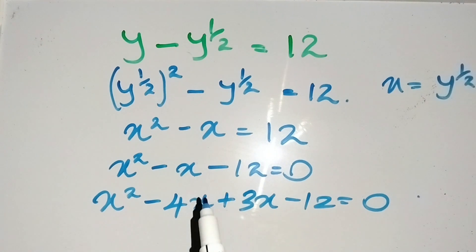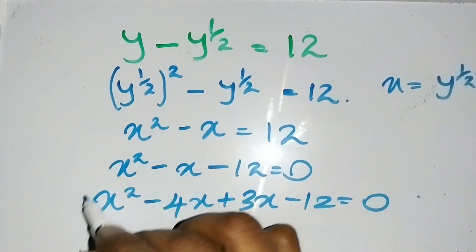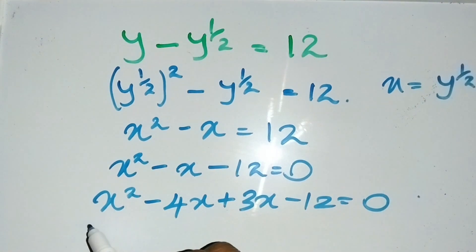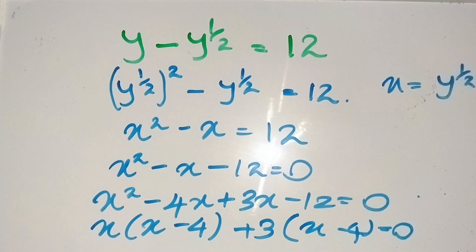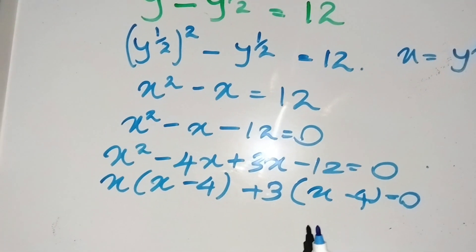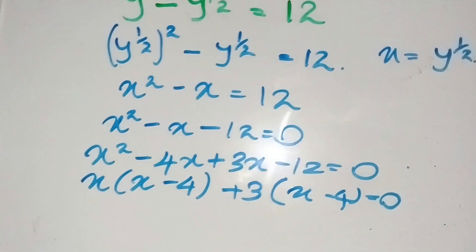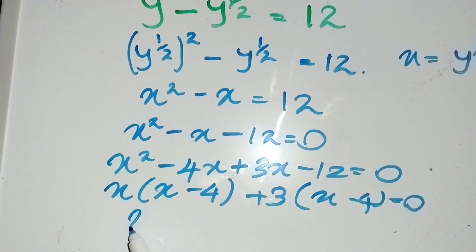Then I can take out common factors from both these pairs of variables. x is the common factor of both the first two variables: x(x - 4). And I can take out 3 from these two factors: 3(x - 4) = 0.